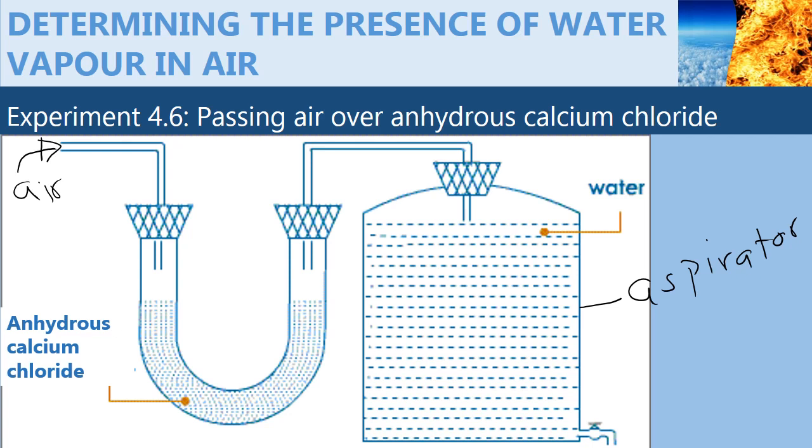Chloride, which is white in color, will form a colorless solution depending on the amount of moisture in the air.